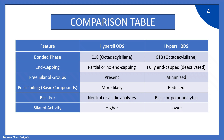Hypersil ODS column is best for neutral or acidic analytes, while Hypersil BDS column is best for basic or polar analytes. Silanol activity is higher in Hypersil ODS, while it is lower in Hypersil BDS.